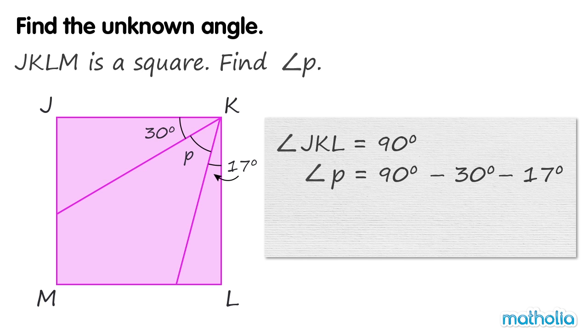90 minus 30 equals 60. 60 minus 17 equals 43. So angle P equals 43 degrees.